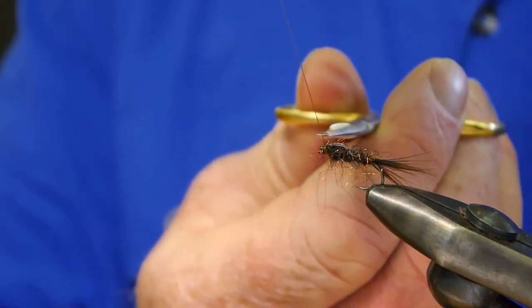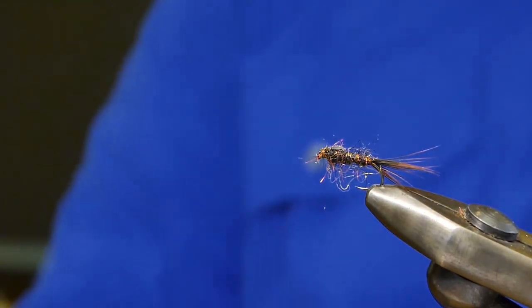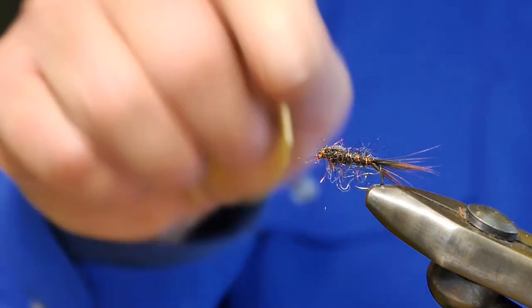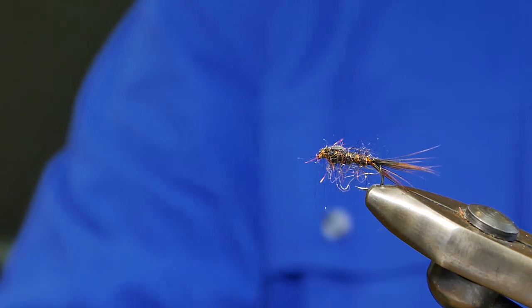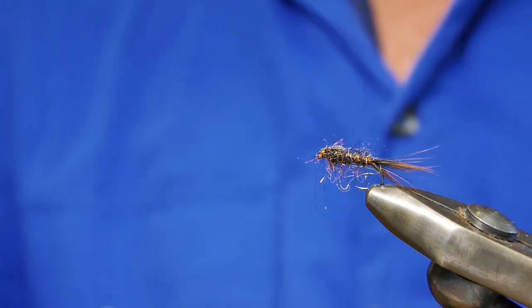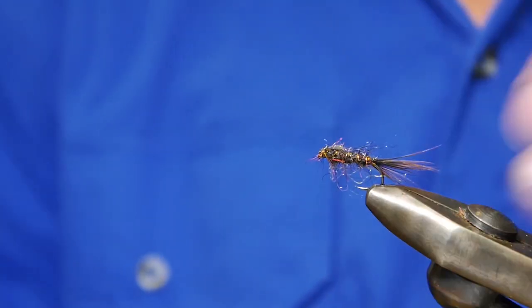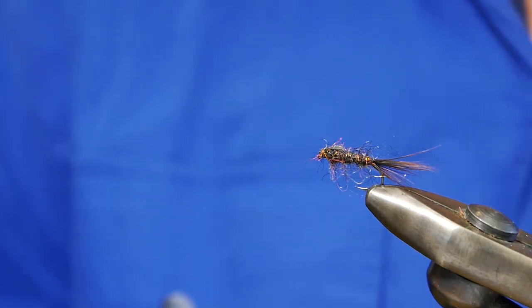This is one of those flies, remember earlier this morning I was talking about that washing line technique? So this is one of those flies you'd have on that. Just sitting there just washing around, not doing terribly much. Just sitting there looking like it should be good to eat.